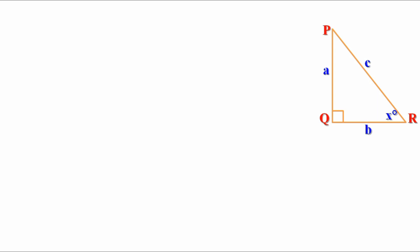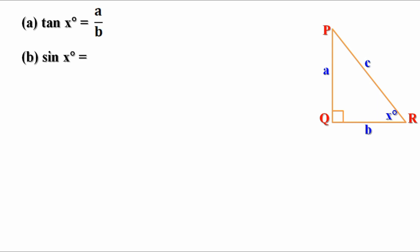We have defined tan x degree. Tan x means opposite side by adjacent side. Here opposite side of angle x degree is A and adjacent side is B. So tan x equal to A by B. Now we have to find sin x. Sin x means opposite side by hypotenuse, that is A by C. Now cos x is adjacent side by hypotenuse, that is B by C.